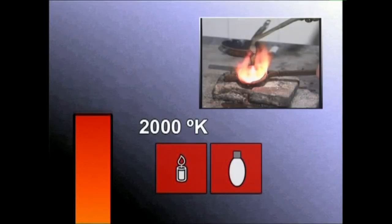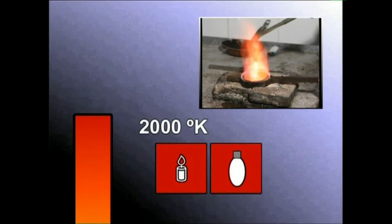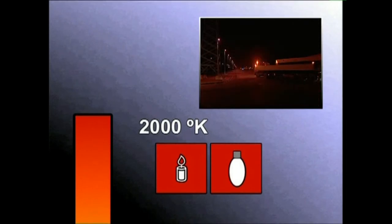Argi iturri bakoitzak bere kolore temperatura dauka. Kolore temperatura baxuena kolore gorriarena da, 2.000 gradu kelvin. Argi iturri artifizialek eman ohi dute argi gorria, suak eta kaleetako sodiozko argiek esate baterako.